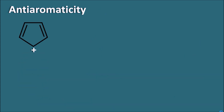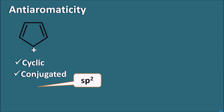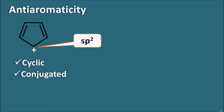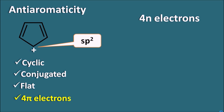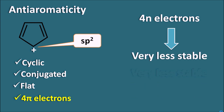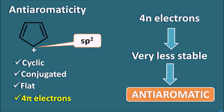Now let us see anti-aromaticity. Consider the cyclopentadienyl cation. This compound is cyclic and conjugated — the two double bonds along with the cation are all conjugated — and the carbocation is sp2 hybridized, making the molecule flat. It meets the first three criteria: cyclic, conjugated, and flat. However, the total number of pi electrons is only 4, which corresponds to 4n electrons (n=1), not 4n+2. Therefore this compound is very less stable and is called an anti-aromatic compound. A compound is anti-aromatic if it is cyclic, conjugated, and flat, but has 4n electrons.